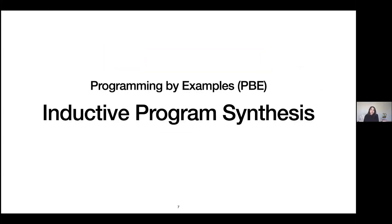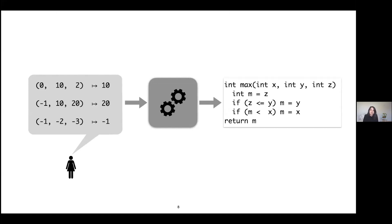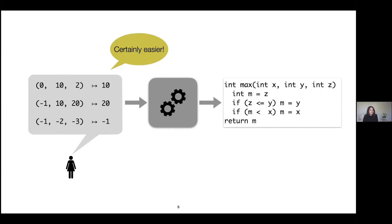Inductive program synthesis — and in particular its programming by examples (PBE) variant — seeks to address the specification problem in classical program synthesis and more ambitiously democratize programming by only asking users to provide examples of their expected input-output behavior. For our max problem, the user could simply say that when the inputs are 0, 10, and 2, the output should be 10. This task is certainly easier than writing down the program itself and can be done by non-expert users.